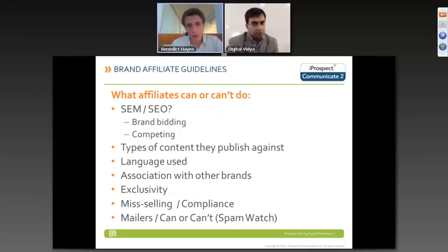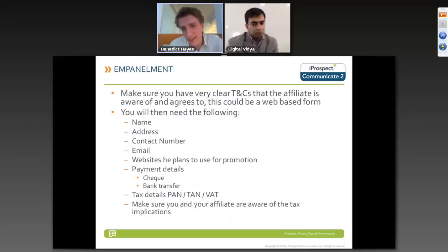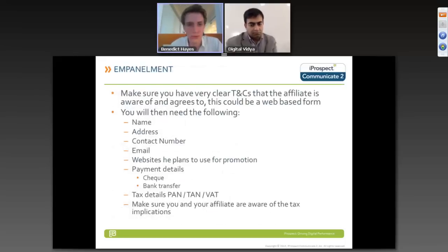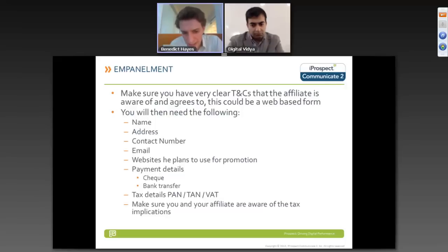When empaneling affiliates, make sure you have a very clear terms and conditions document that the affiliate is aware of and agrees to — this could be a web-based form. The brand guidelines you've created should be written into a T&Cs document for the affiliate to confirm they'll operate accordingly. You also need to collect their name, address, contact number, emails, the websites they plan to use, payment details, and tax details. Make sure you and your affiliate are aware of all tax implications to avoid nasty surprises.